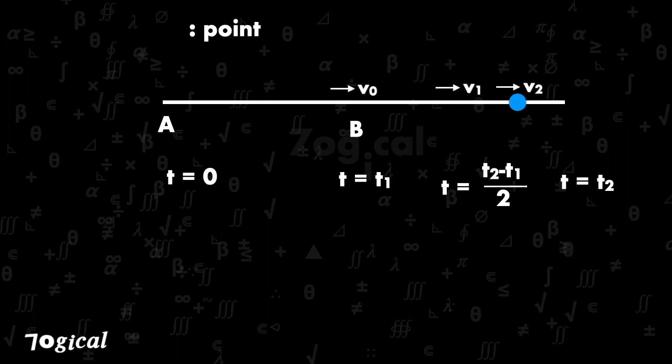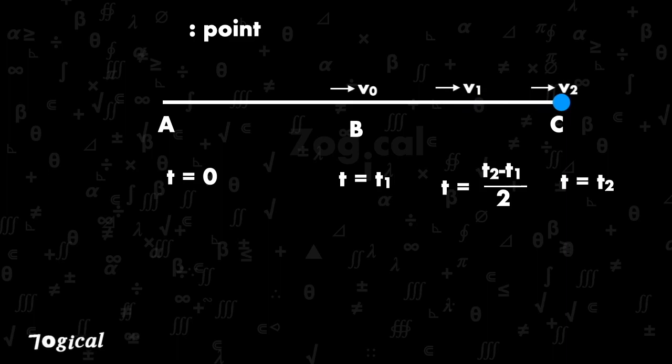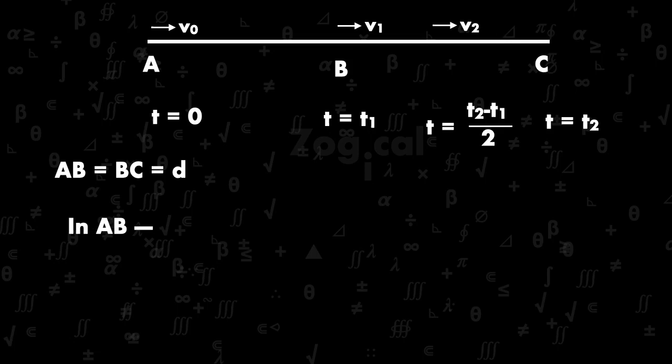After this, it starts moving with velocity v2 for another half of the time. At time t = t2, the point is at C. Let the distance AB = BC = d. In segment AB: t1 = d / v0.